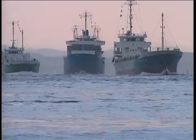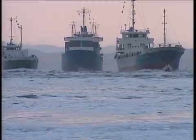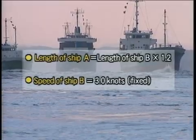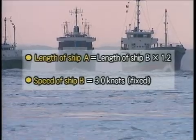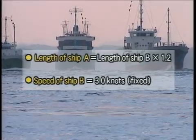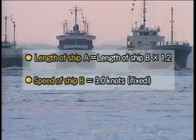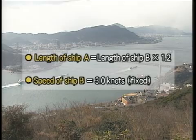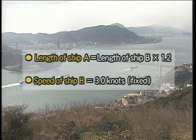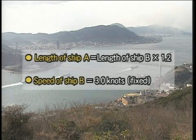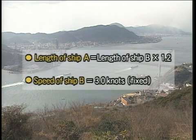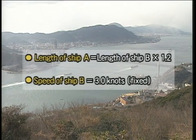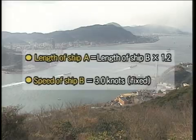Let's take a look at the effect of ship speed. In this case, the ratio of ship speed of overtaking Ship A to that of overtaken Ship B is 1.2, and the beam distance between them is half of the ship length. The two ships are steered to maintain parallel courses. The simulation is made by changing the speed of overtaking Ship A, maintaining the speed of overtaken Ship B at 3 knots.